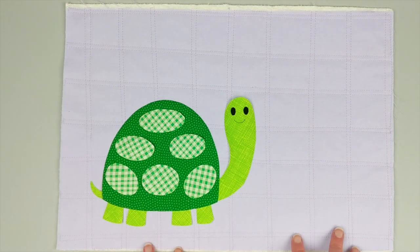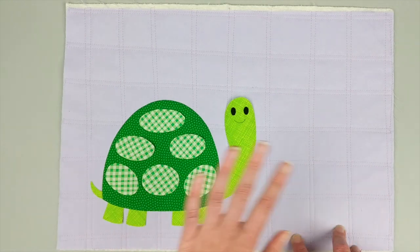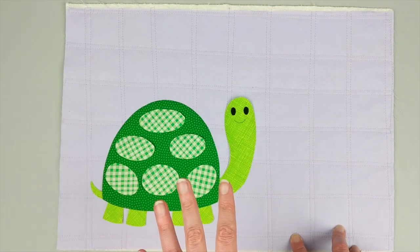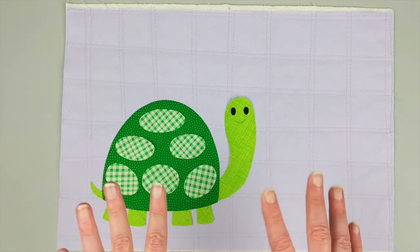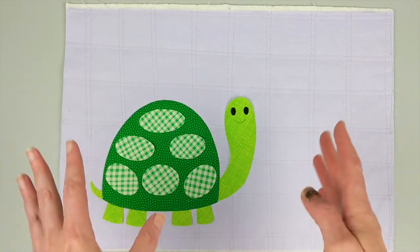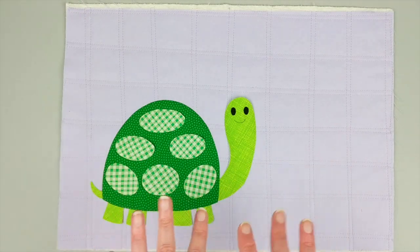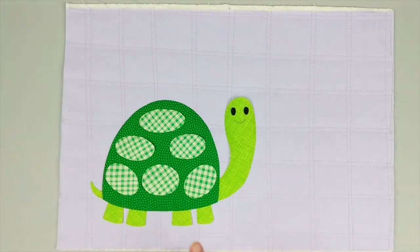I like how that looks, so I'm going to take that over to the ironing board. The next step is to fuse it down. Follow the directions on whatever fusible adhesive you're using and fuse that in place.